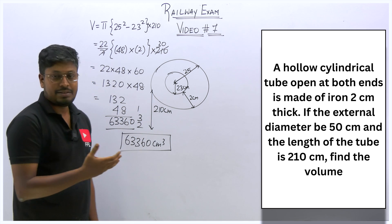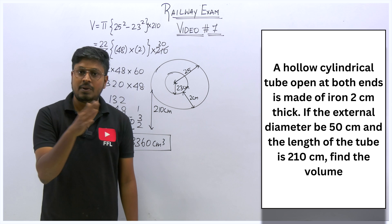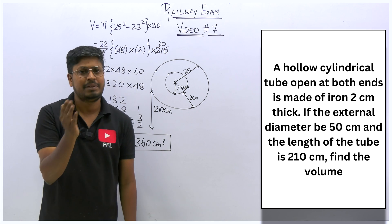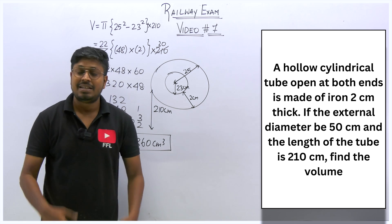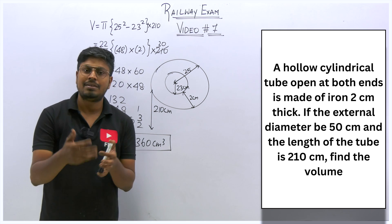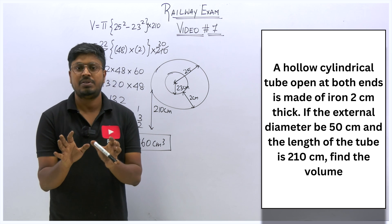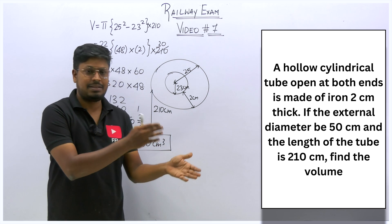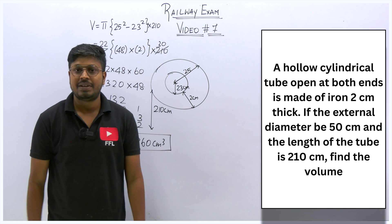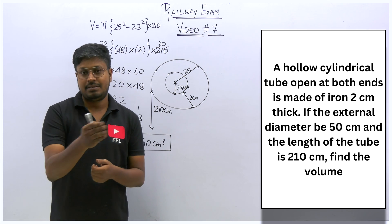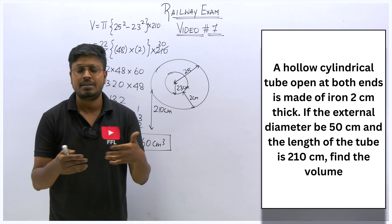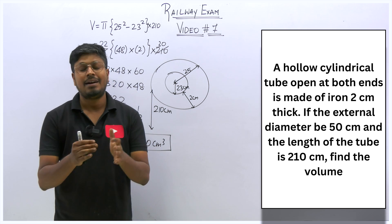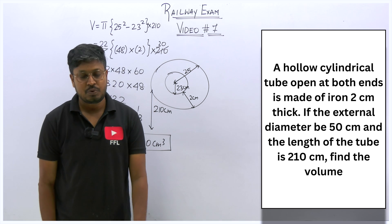In this video we covered all the different question types for hollow cylinders — finding volume when both radii are given, finding thickness using volume and external radius, and finding volume when thickness is given. Day after tomorrow I will post a test on hollow cylinders — do not forget to write it. Also search for more cylinder questions online to practice and check your mistakes. Thank you so much for watching, and share this video with friends preparing for railway exams.